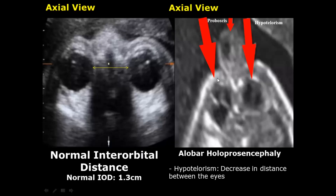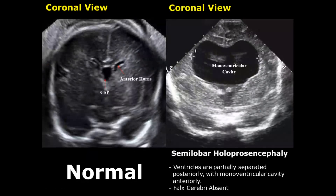Another facial abnormality is hypotelorism — the reduced distance between the orbits. Normally it is around 1.3 centimeters, but in hypotelorism it is lesser, and we can see the eyes much closer to each other. In semilobar holoprosencephaly, the ventricles posteriorly are partially separated, but anteriorly they are fused and form a single large monoventricular cavity, as shown in this image. The falx cerebri will also be absent.